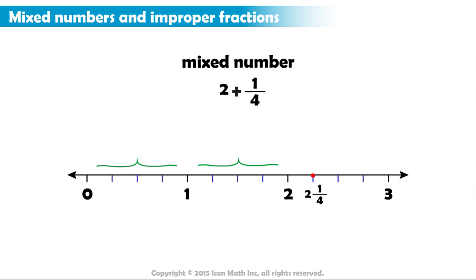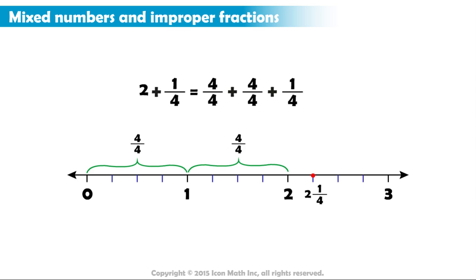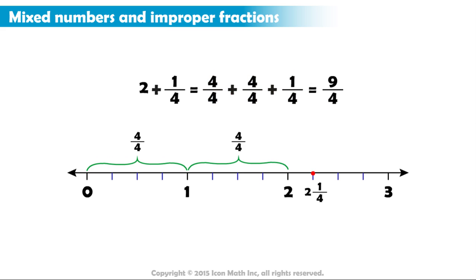A complete whole is four out of four, or four-fourths. So, two plus one-fourth is also four-fourths plus four-fourths plus one-fourth. And if we add those, we get nine in the numerator and four in the denominator.